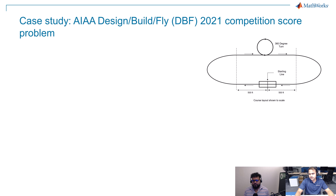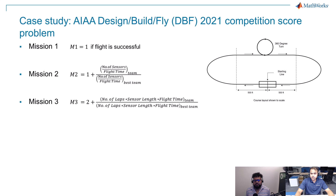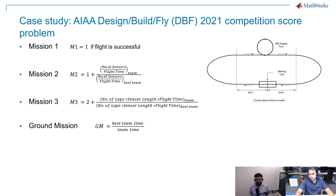In this competition, teams need to fly a course layout with multiple missions. Mission one was binary — a successful flight scored one point, otherwise zero. In mission two, teams had two design variables and scores were calculated relative to the best team. In mission three, there were three design variables: number of laps, sensor length, and flight time, and teams needed to tow a number of sensors as payload. Finally, there was a ground mission depending on crew skills to load and unload the payload, and the total mission score was the sum of all missions.